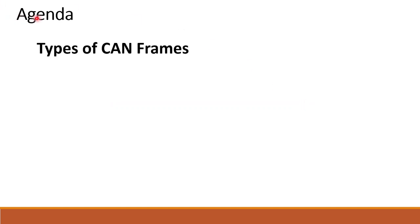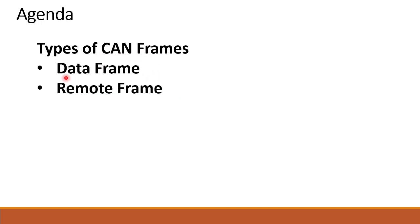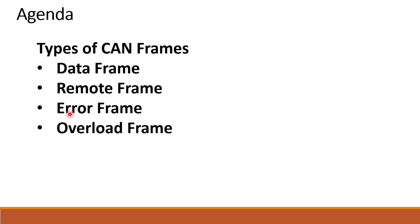Today's agenda is types of CAN frames. We have different types of CAN frames defined in the CAN standard. The first one is data frame, second one is remote frame, third one is error frame, and fourth one is overload frame. We will be discussing these one by one in the next slides.